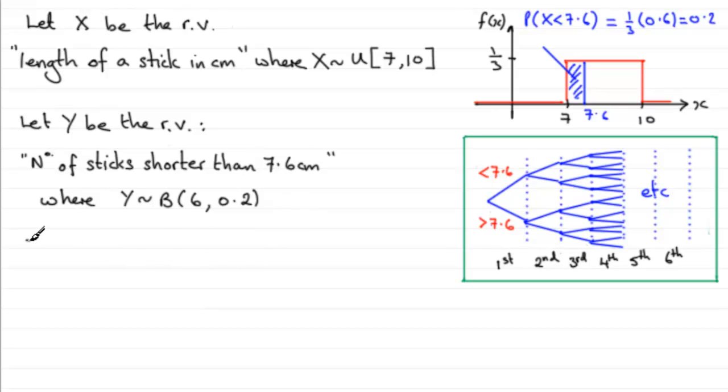So when it comes to the probability of winning a toy, let's just put that down here as an intro, we know that the probability of Y must be greater than 4. We need four or more sticks that are shorter than 7.6 centimeters. So in the usual way when we're working out something like this, we would want to do 1 minus the probability that Y is, say, less than or equal to 4.